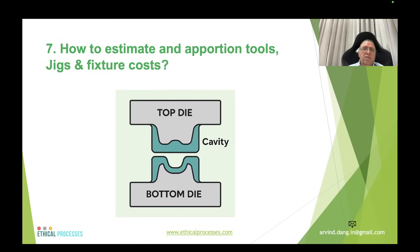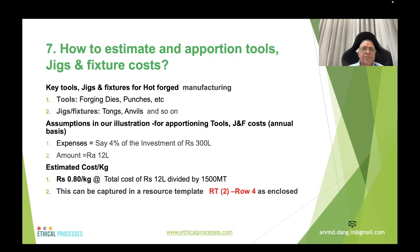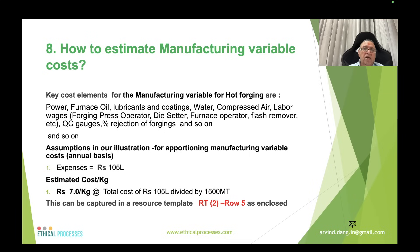Tools, jigs, and fixtures for forging include forging dies, punches, tongs, and wheel-handling equipment — shown here with a top die and bottom die with cavities. Assuming total cost at 4% of investment, that works out to ₹12 lakhs. Estimated cost per kg = ₹12 lakhs ÷ 1,500 metric tons = ₹0.80 per kg, captured in row 4 of resource template RT2.